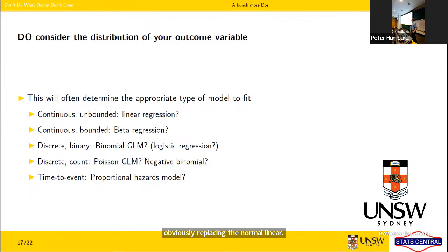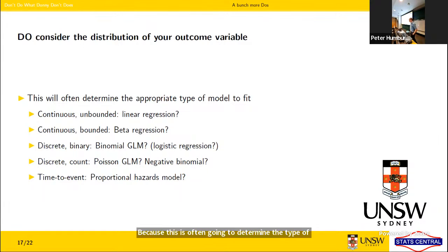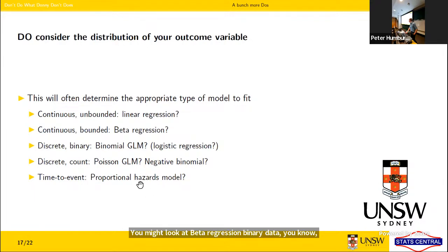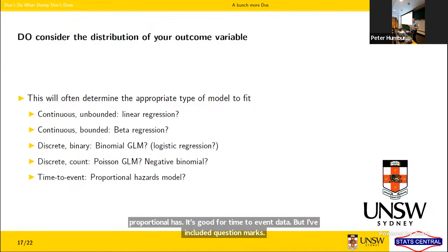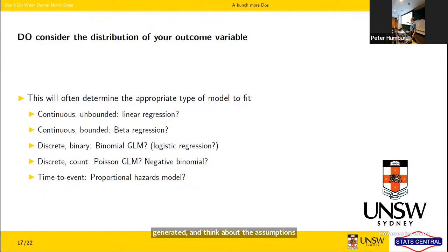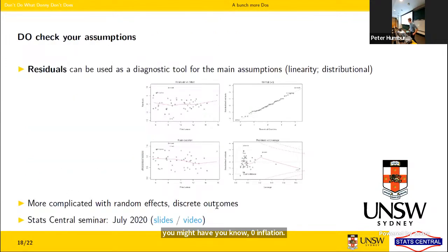Do consider the distribution of your outcome variable, as this usually determines the type of model you'll fit. For continuous unbounded data, linear regression may make sense; if bounded, look at beta regression; binary data suggests logistic regression; count data may suggest Poisson; proportional hazard models are good for time-to-event data. But this shouldn't be a cookbook — you need to think about how the data was generated and whether model assumptions align, considering issues like changing variance in linear regression or zero-inflation in count data.